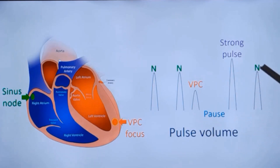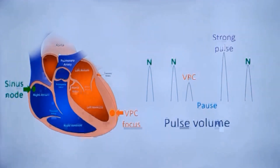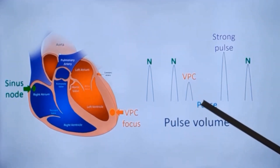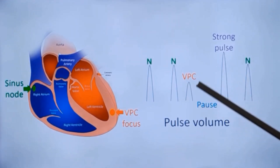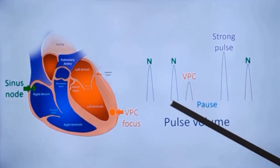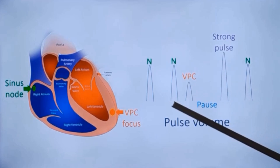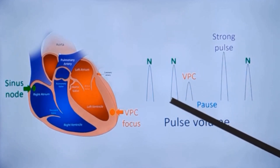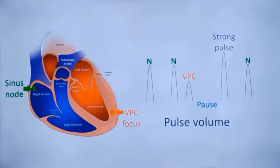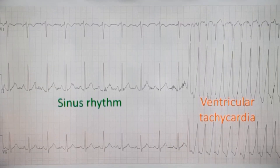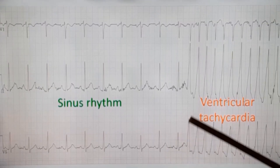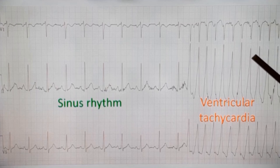The next beat after a ventricular ectopic is usually a normal beat with a normal pulse volume. There is also an important interval in ventricular ectopics called the coupling interval — the interval from the normal beat to the abnormal ectopic beat. The shorter the coupling interval, the more premature the ectopic. When it is very premature, it can lead to other arrhythmias.